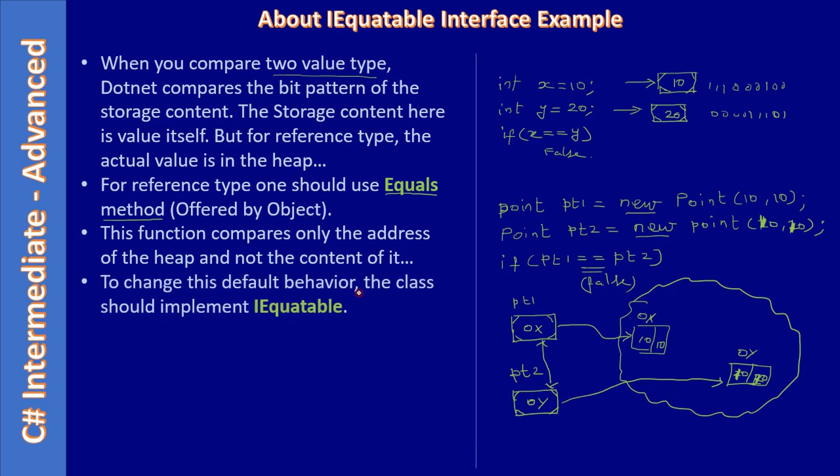To change this default behavior, the class should implement IEquatable. So if you are creating a custom class called Point, then your Point class should implement IEquatable interface and override the Equals method. The Equals method tells when two objects are equal.